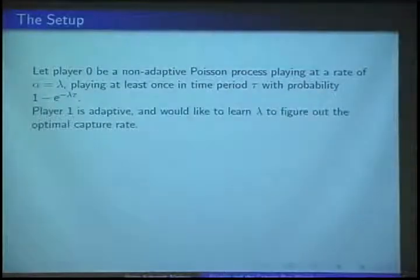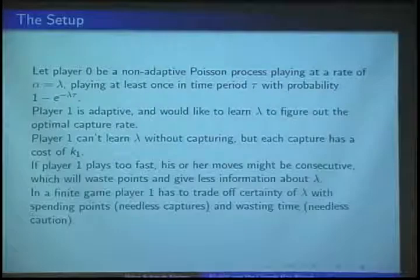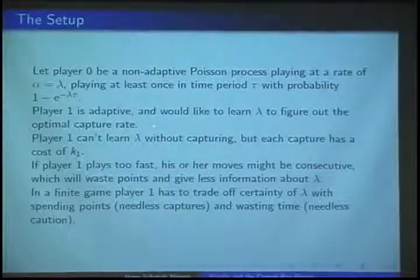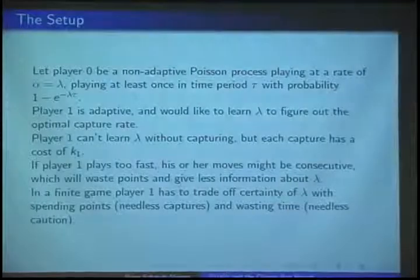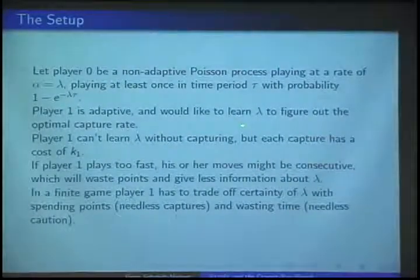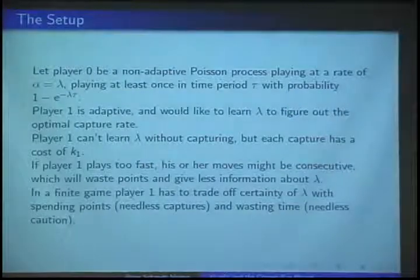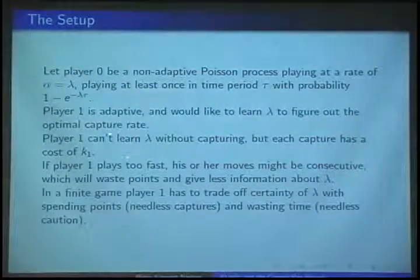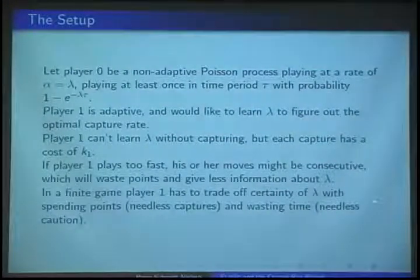Here is the setup I'm considering. We have an opponent, player zero, who's playing a Poisson process with a constant lambda. Player one is adaptive and would like to learn lambda, where lambda is sampled from some unknown distribution. Player one can't learn lambda without capturing.